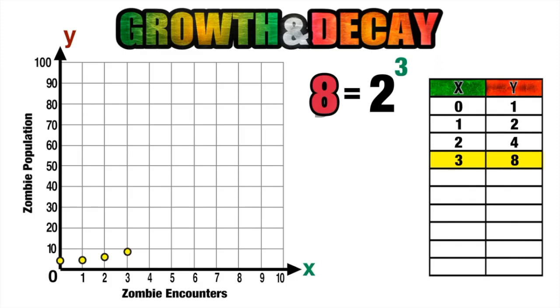So now we can continue this process of inputting x values to find the corresponding y values so that we can see what other points that our graph is going to pass through. And we can continue this process and complete our graph.